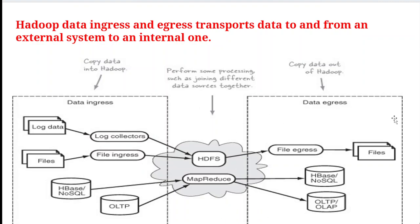Data egress means sending data from HDFS and MapReduce out to file egress, files, NoSQL, HBase, OLTP databases, or OLAP databases. If you want to retrieve any data from HDFS or MapReduce, that is called data egress. So data ingress and data egress are the two mechanisms supported by Hadoop to move data in and out.